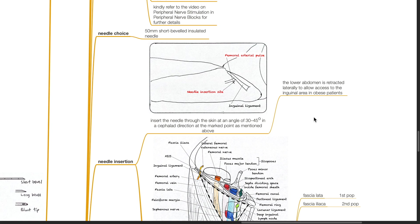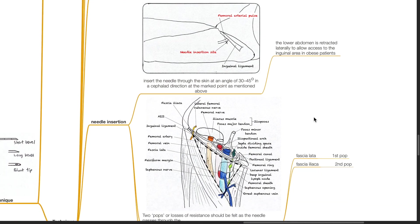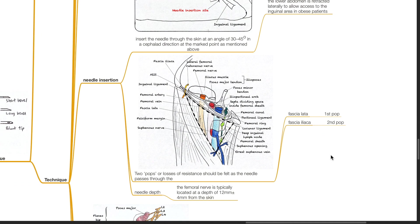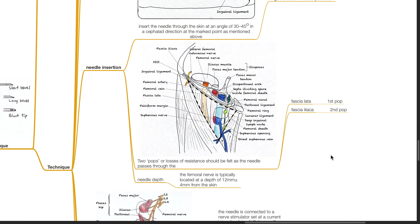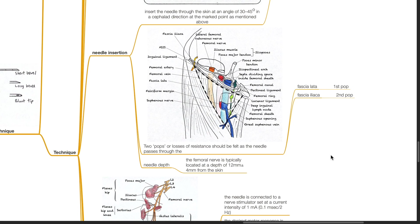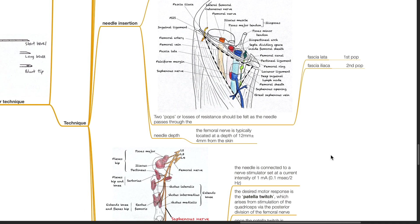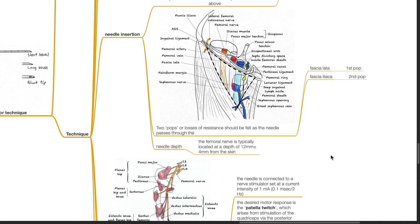The lower abdomen is retracted laterally to allow access to the inguinal area in obese patients. Two pops or losses of resistance should be felt as the needle passes through the fascia lata (first pop) and fascia iliaca (second pop). The femoral nerve is typically located at a depth of 12 mm ± 4 mm from the skin.